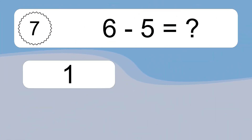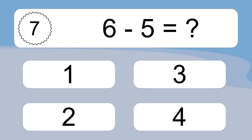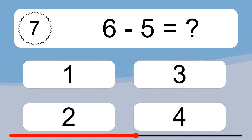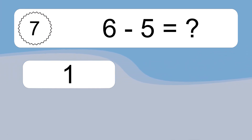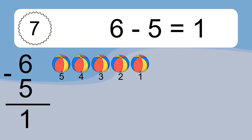6 minus 5 equals what? 6 minus 5 equals 1. Let's count it: 5, 4, 3, 2, 1.